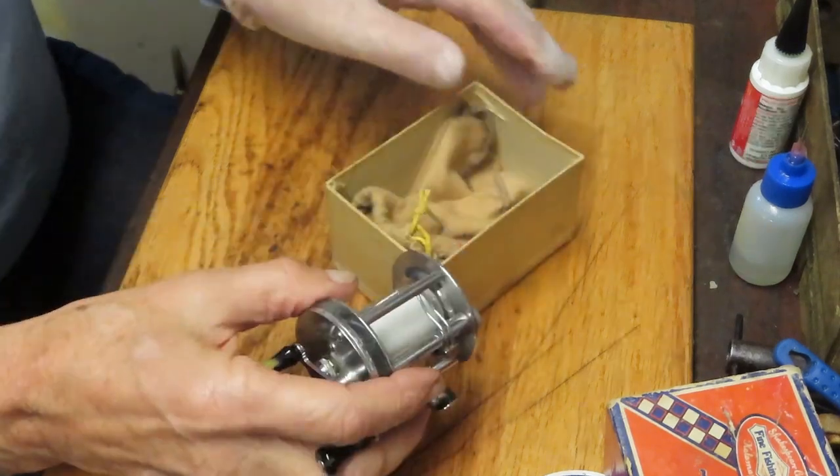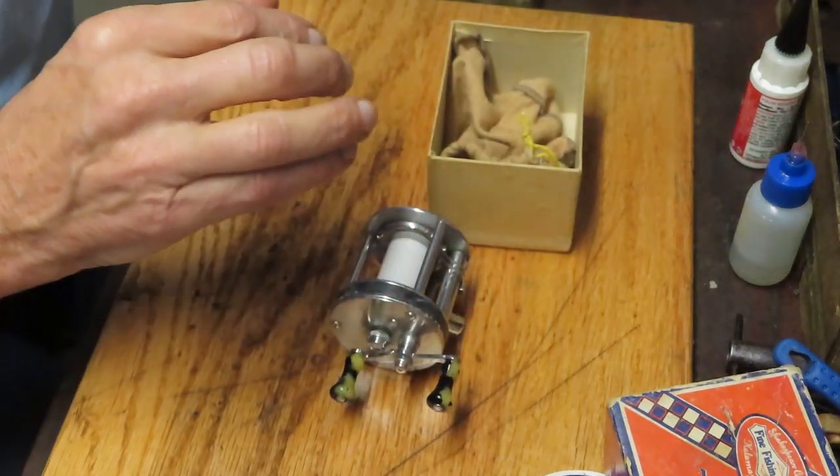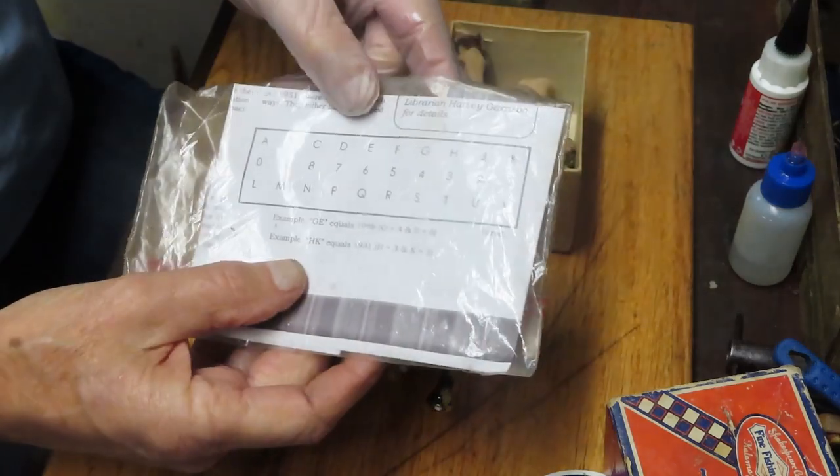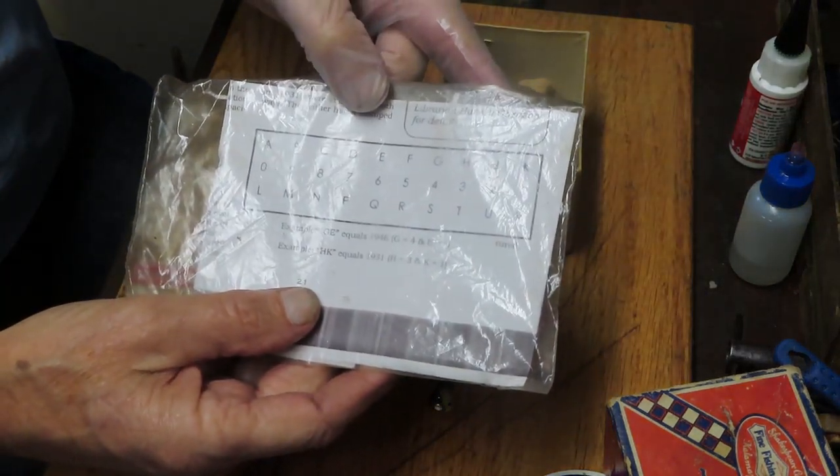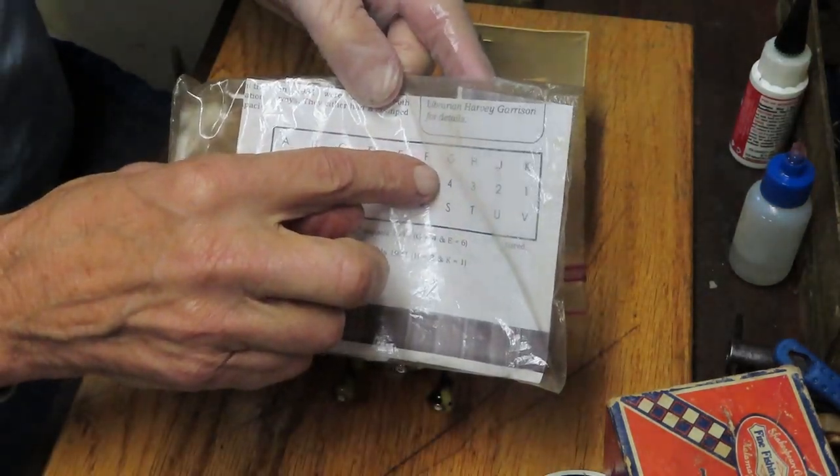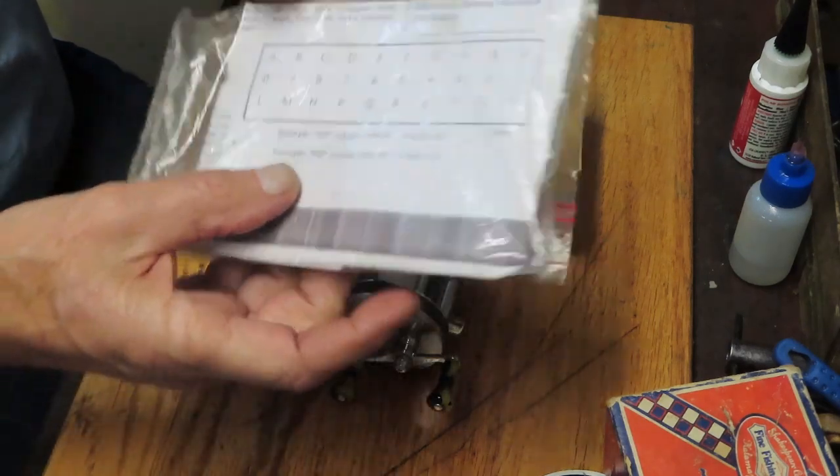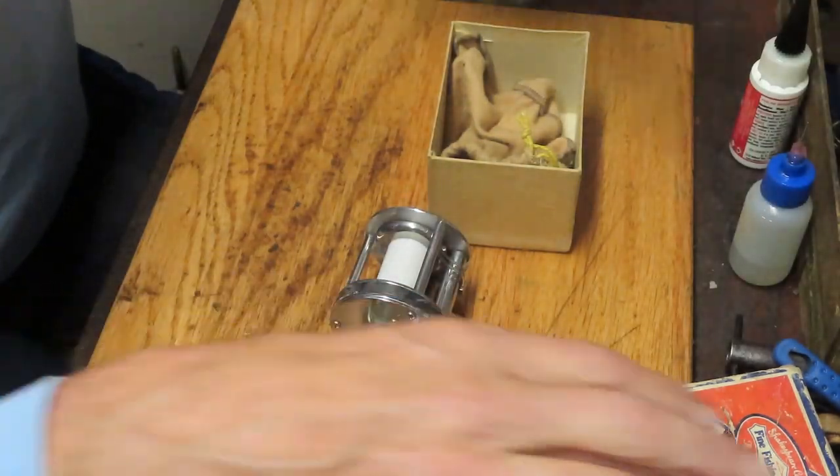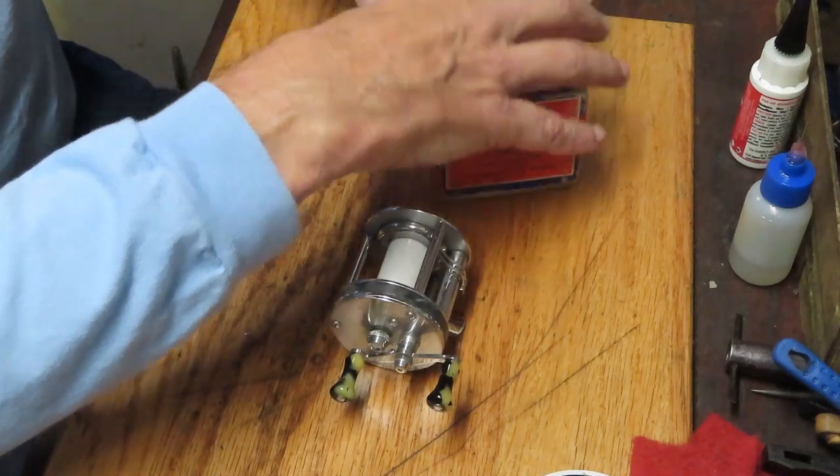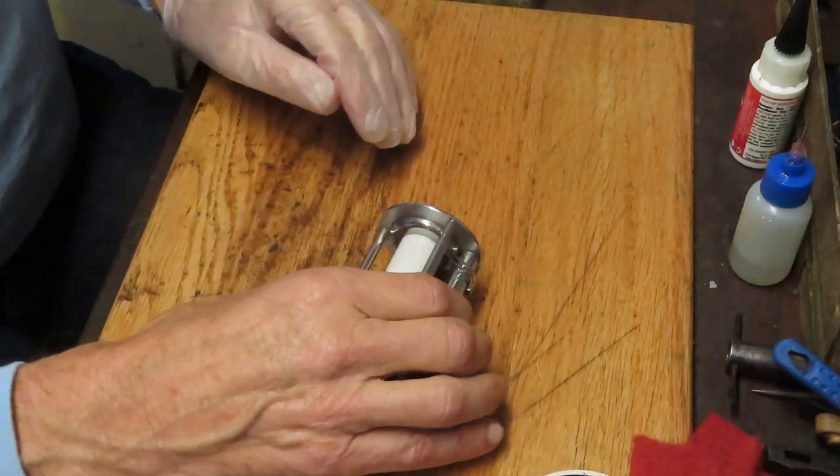It says Model G-E. Shakespeare uses a special decoder, not real special, but there's model numbers here. G is the 40s and E is 6. So this reel was made in 1946, right after the war ended and production on reels were starting again.